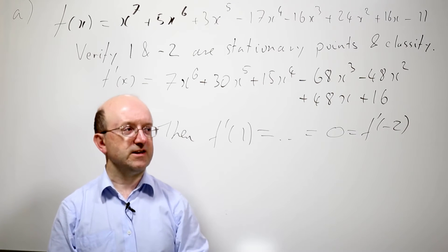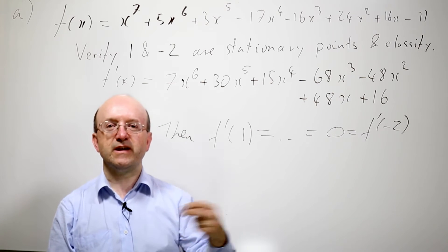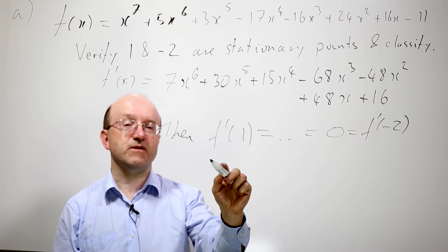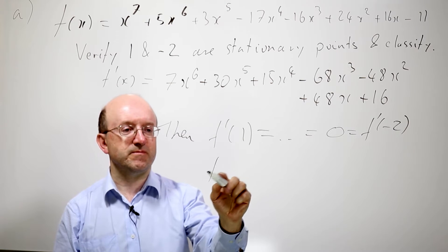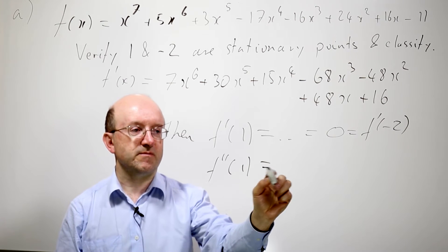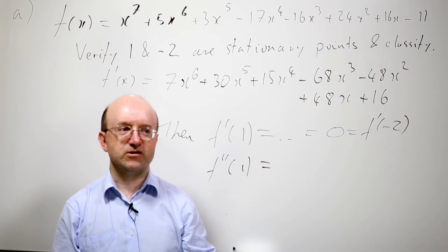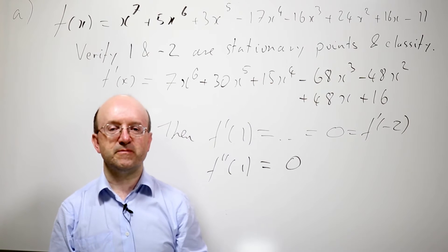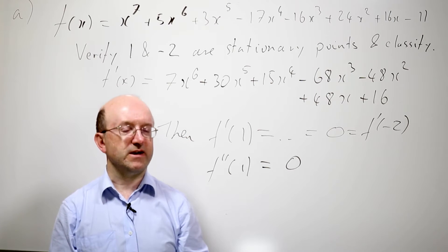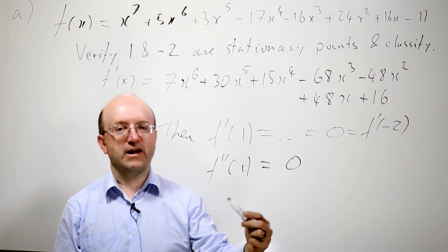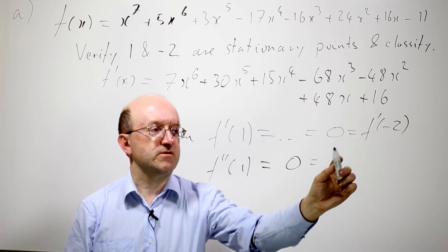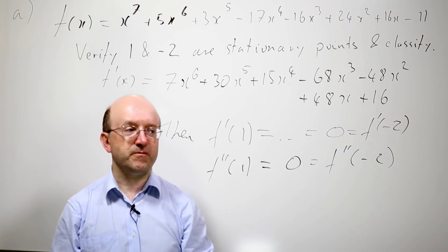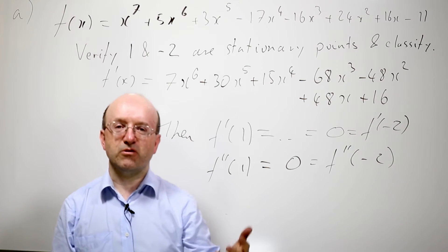To actually classify the type of stationary points, we need to calculate the values of higher derivatives. So we'll look at the second derivative. I'm not going to write the second derivative down. But once we do, again, evaluating that 1 is easy, just sum the coefficients, and eventually you find that that's 0. And then you do the same thing for minus 2. Again, that's quite a bit more work, but after enough calculations, you find the second derivative of minus 2 is also 0. So we have to go on again.